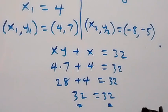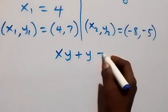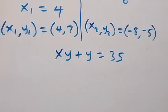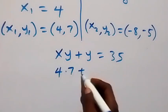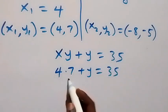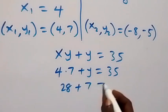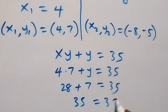From equation 2, xy plus y equals 35. Checking with the first solution, x is 4: 4 times 7 plus 7 equals 28 plus 7, which equals 35. Left hand side equals the right hand side.